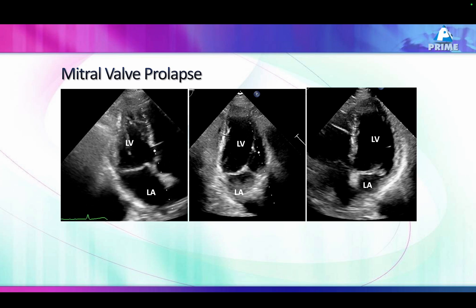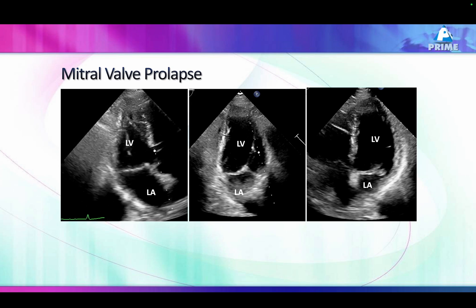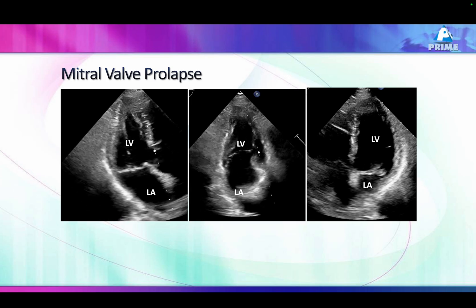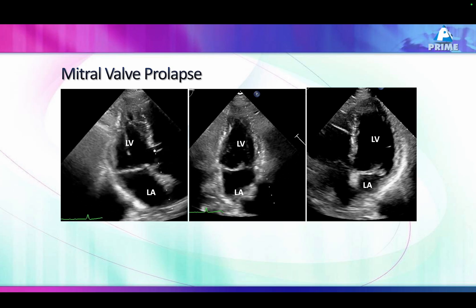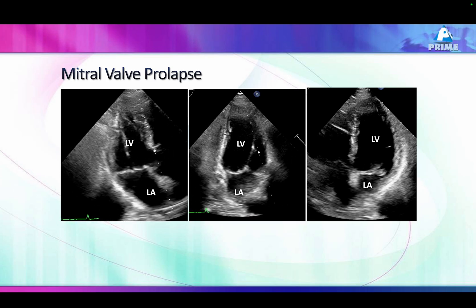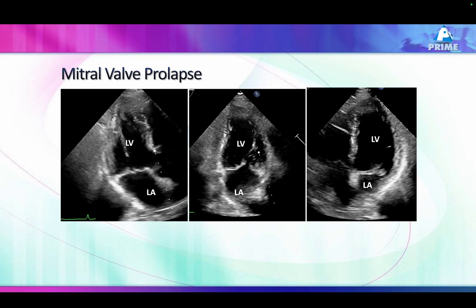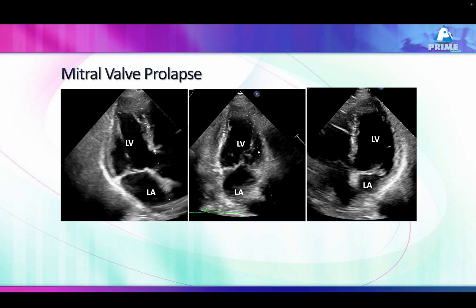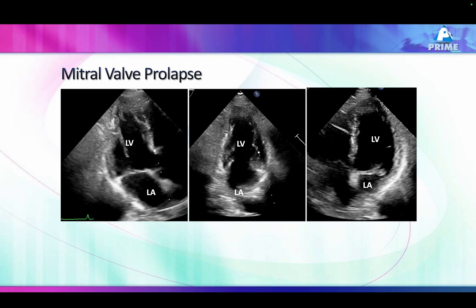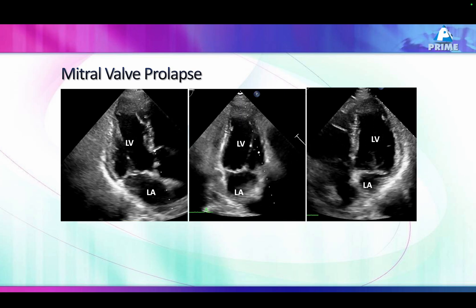You see the anterior and posterior mitral leaflets going beyond the annulus — that is the definition of mitral valve prolapse. If the leaflet goes more than a millimeter beyond the annulus, we call it mitral valve prolapse.